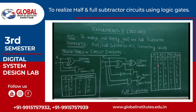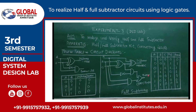Next is the full subtractor. The full subtractor is used to find the difference of three bits and generates two outputs. One is the difference and the second is the borrow. The expression for the difference is A XOR B XOR C, and the expression for borrow is (B XOR C) multiplied by A-bar, plus BC. This is implemented by these logic gates.